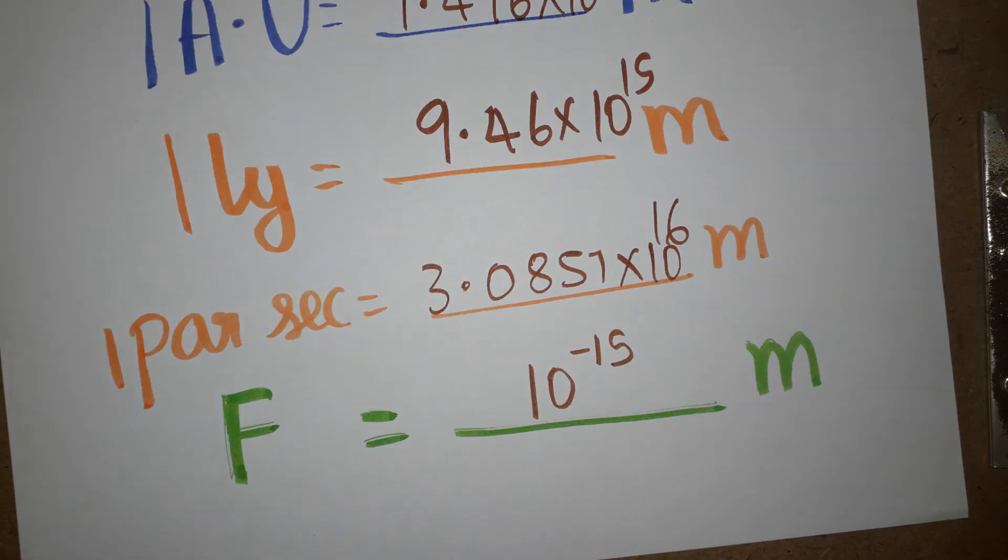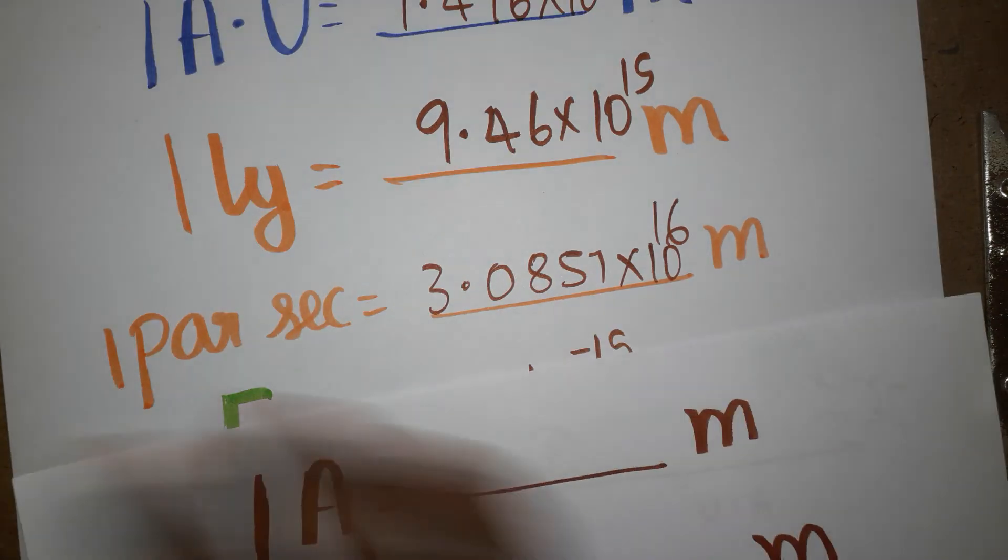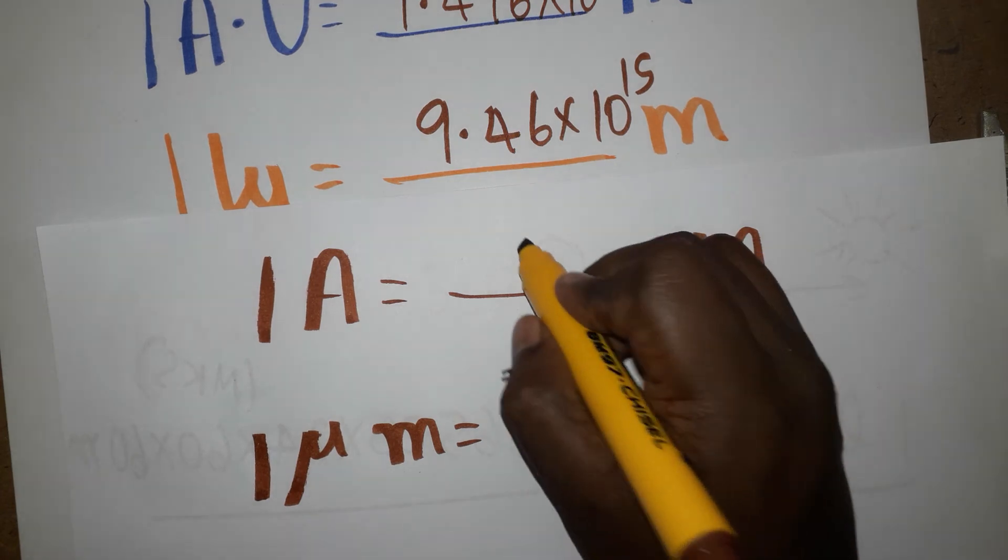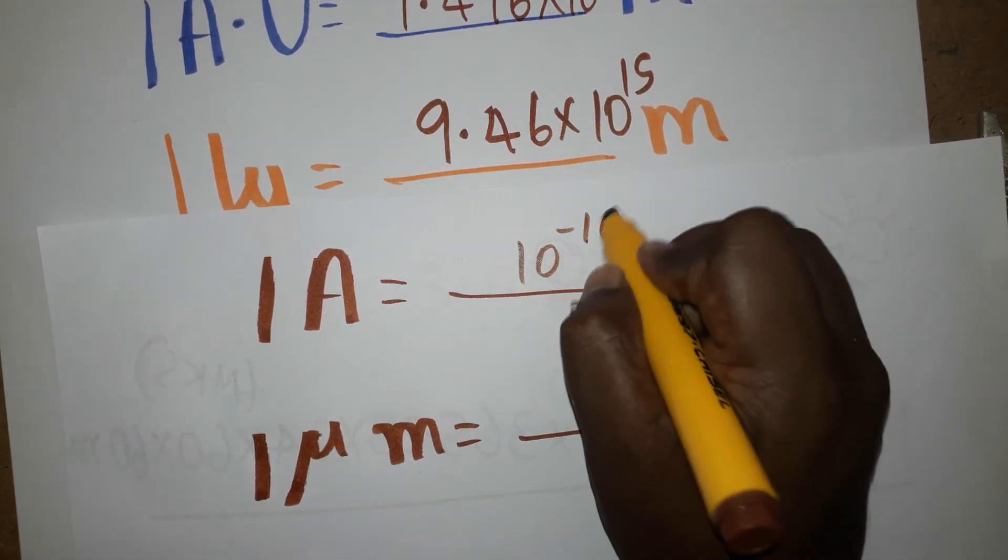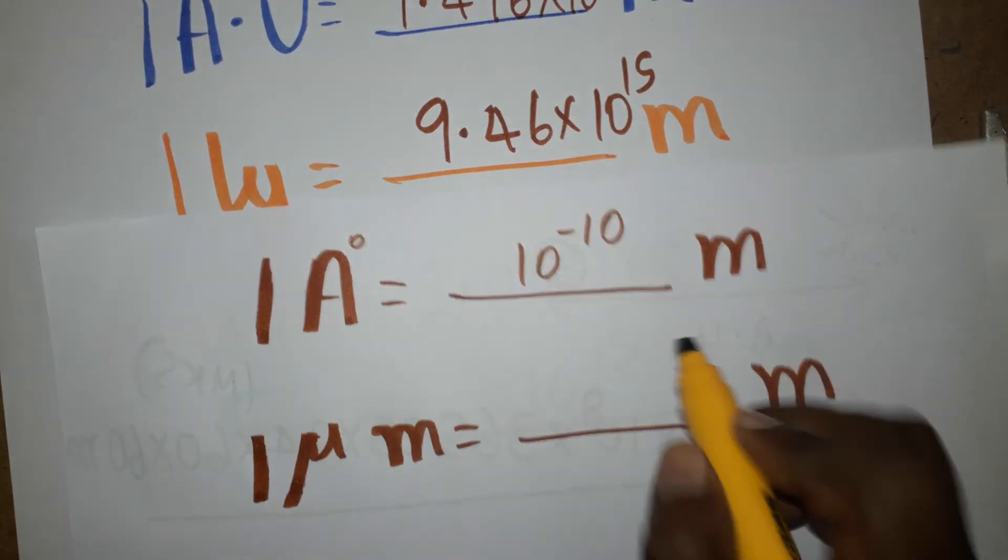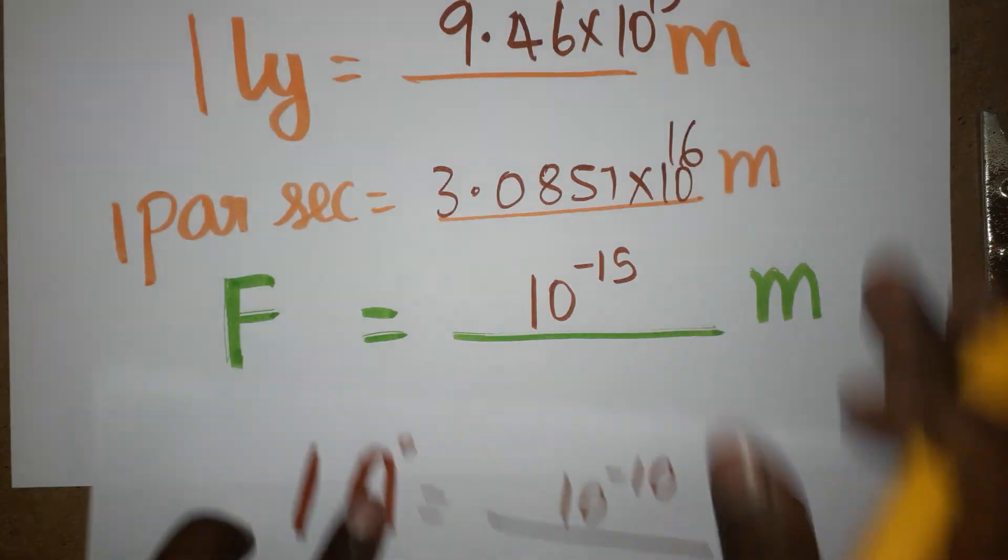Another unit we are taking is angstrom unit, which is going to be 10 power minus 10 meter. This is a fixed value. It is atom size and it is nuclear size.